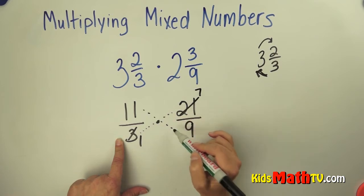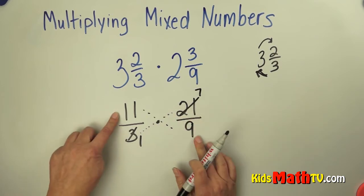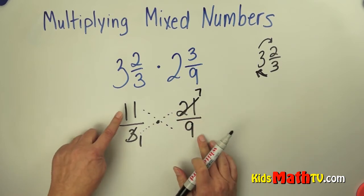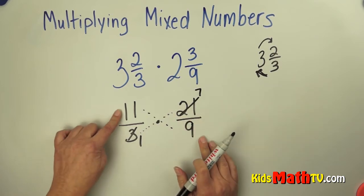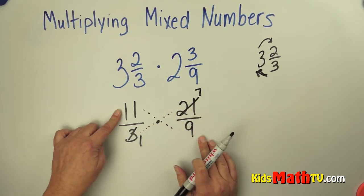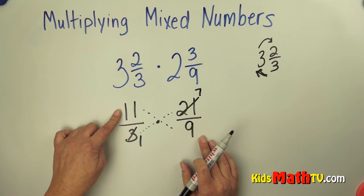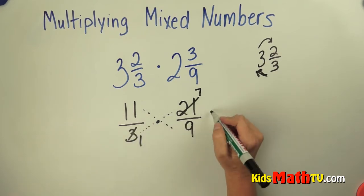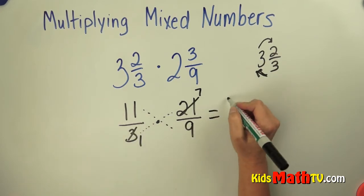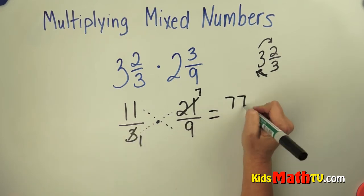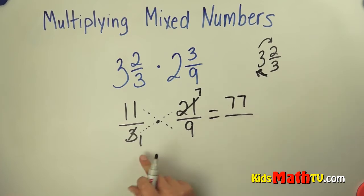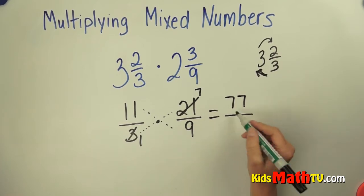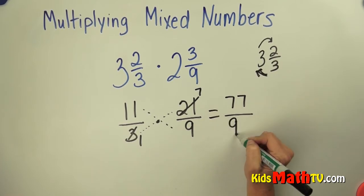I look at 11 and 9 — there is not a number that will divide both evenly. So now I multiply the numerators: 11 times 7 is 77. And the denominators: 1 times 9 is 9.